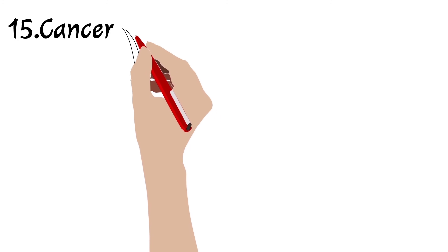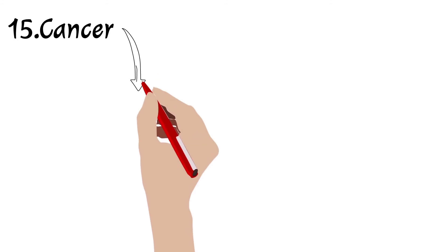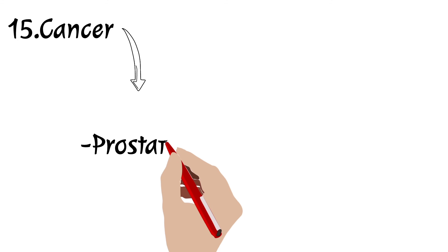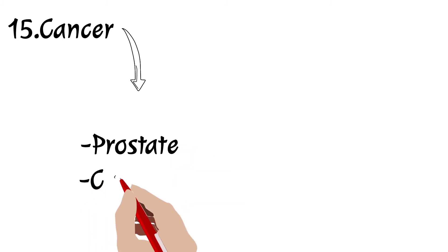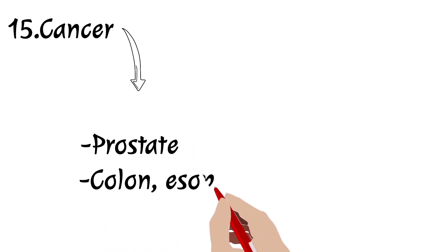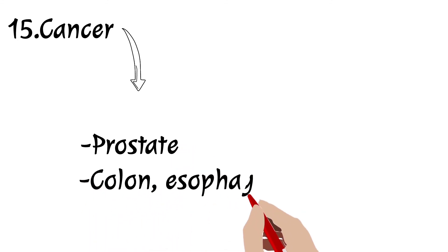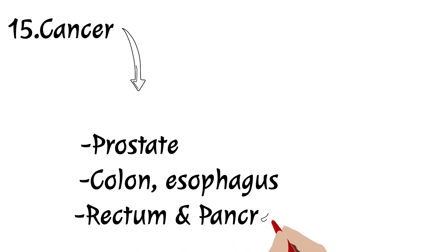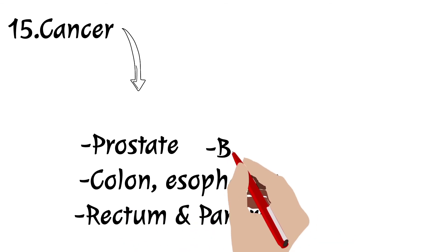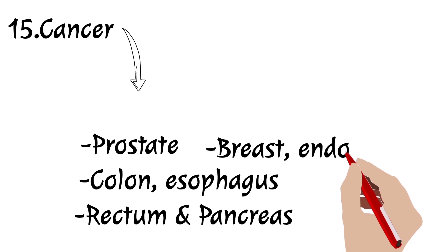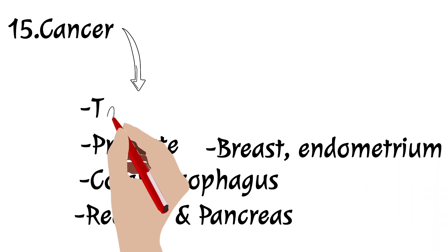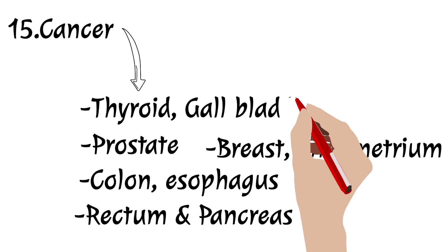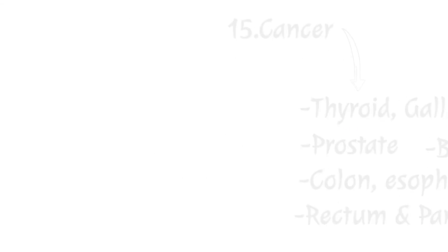The twelfth complication is acid reflux — gastroesophageal reflux disease. The thirteenth is gallstone formation. Obese individuals almost universally develop fatty liver. The fifteenth complication, and very dangerous, is increased cancer risk — studies show higher rates of cancers of the prostate, colon, esophagus, rectum, pancreas, breast, endometrium, thyroid, and gallbladder in obese individuals.